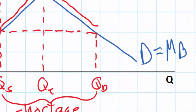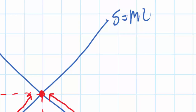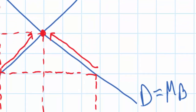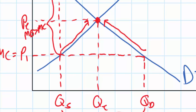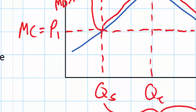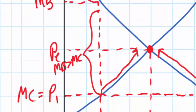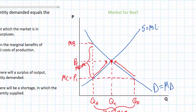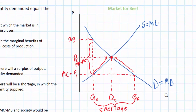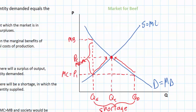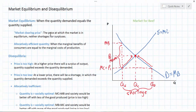Neither too much nor too little is being produced at equilibrium. If quantity produced is greater than equilibrium, costs of production exceed consumer benefits on the margin, so we'd be better off with less produced. If quantity is less than equilibrium, there may be a shortage where benefit from the last unit exceeds its cost, and society would be better off with more produced. The concepts of allocative efficiency, equilibrium, and disequilibrium will play an important role in future videos. The purpose of this video was to introduce market equilibrium as the market clearing price and quantity at which neither shortages nor surpluses occur and the market produces at an allocatively efficient level.